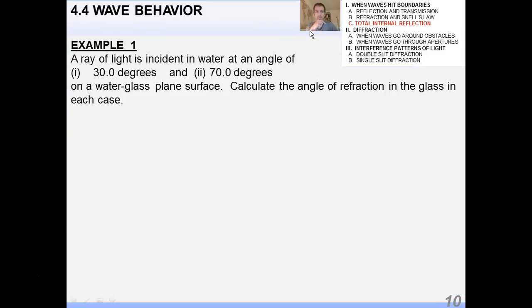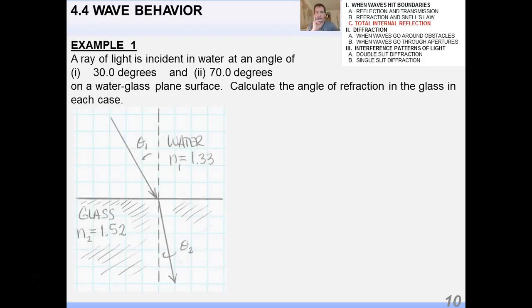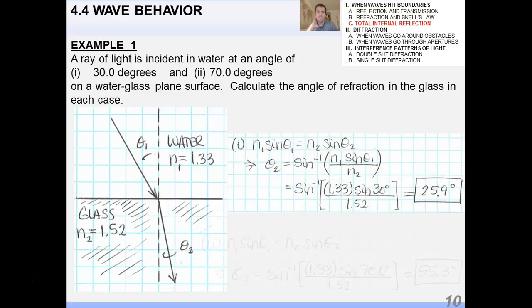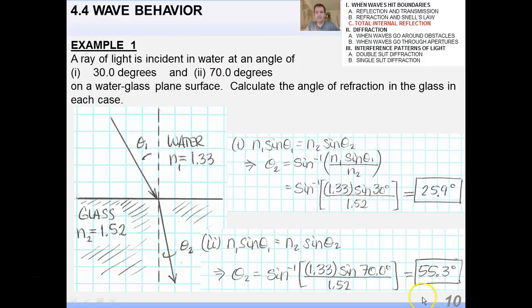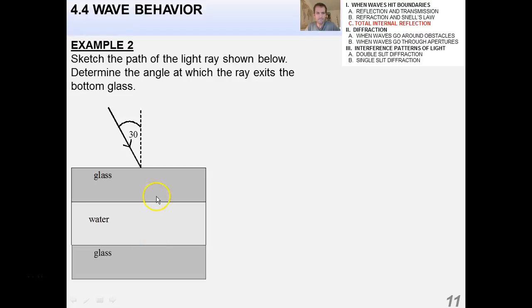All right, so let's do an example here. A ray of light is incident in water at an angle of 30 and 70 degrees on a water glass plane surface. Calculate theta 2, or the angle of refraction in the glass, and it really helps you to draw a diagram in these cases. I really recommend that you do. It's a very simple diagram. In case 1 with 30 degrees, the angle is 25.9. At 70, it's 55.3. You can see in both cases that theta 2 is properly less than theta 1 because the index of refraction of glass is greater than that of air, or glass is more optically dense. So that ray of light is refracted towards the normal in both cases.